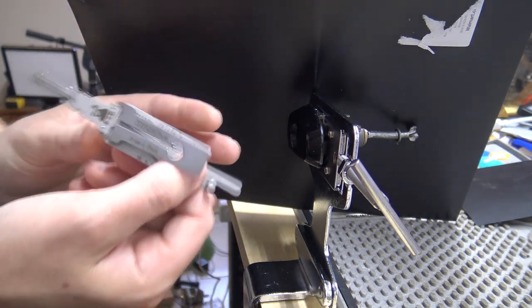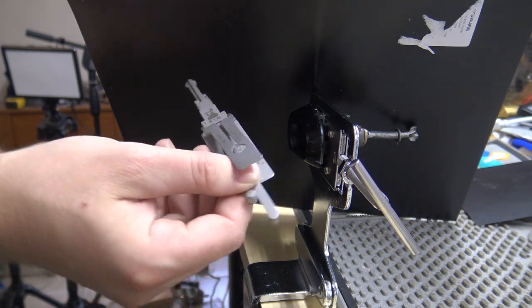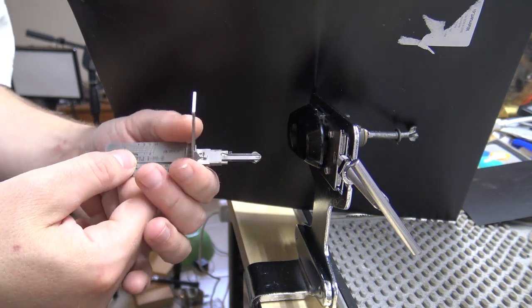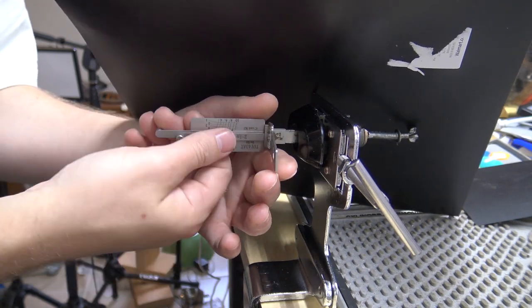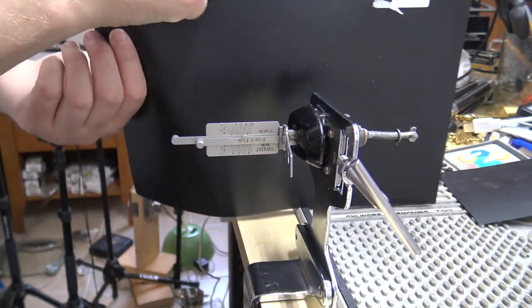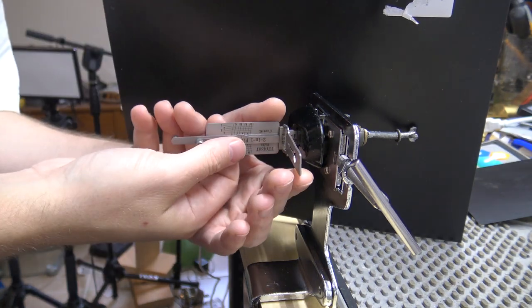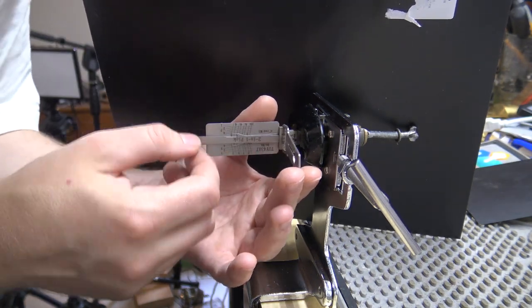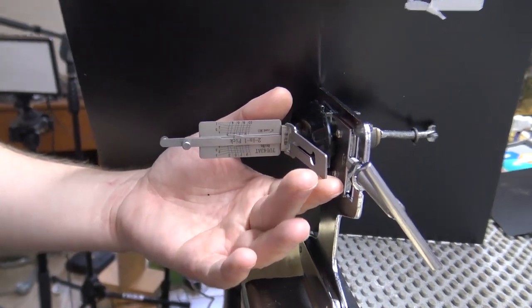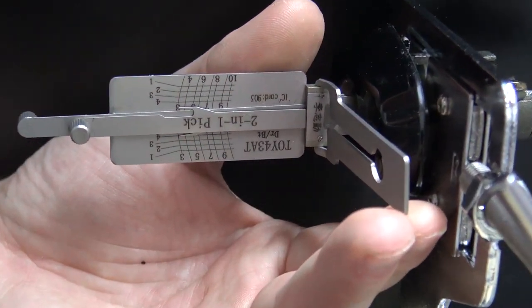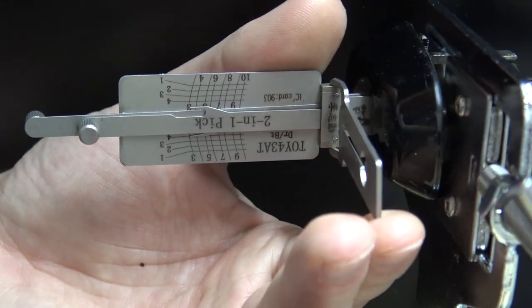So this one we're using the Toy 43 AT leashy. See if we can pick and decode it. I actually made a key to this one, it's probably been a couple of years, but I never did a video on it. So make sure to get the leashy all the way in there. Zoom in so we can hopefully all see.